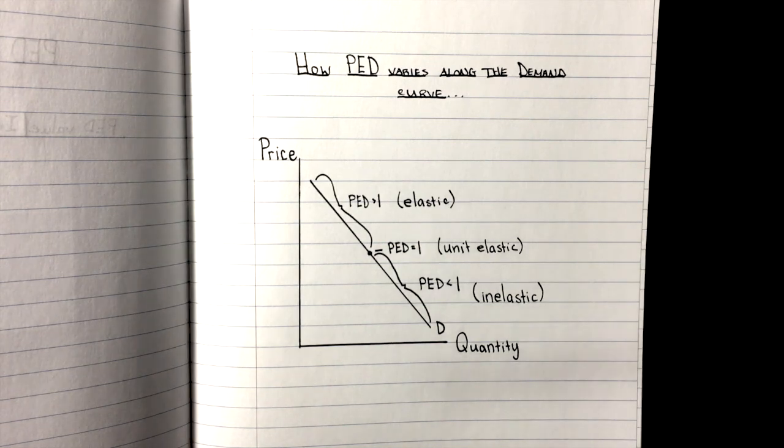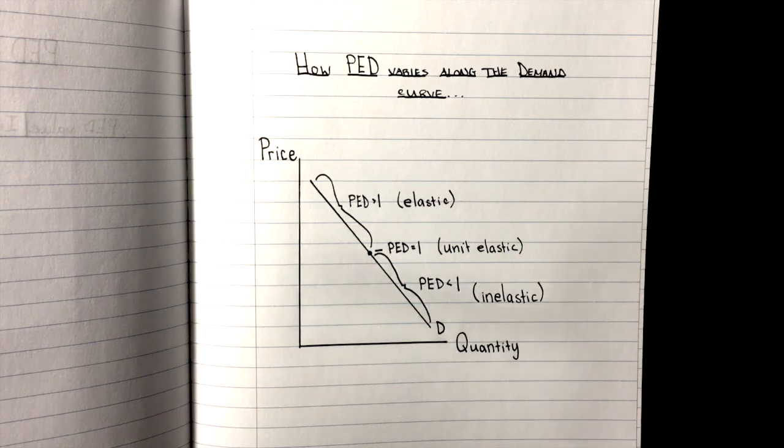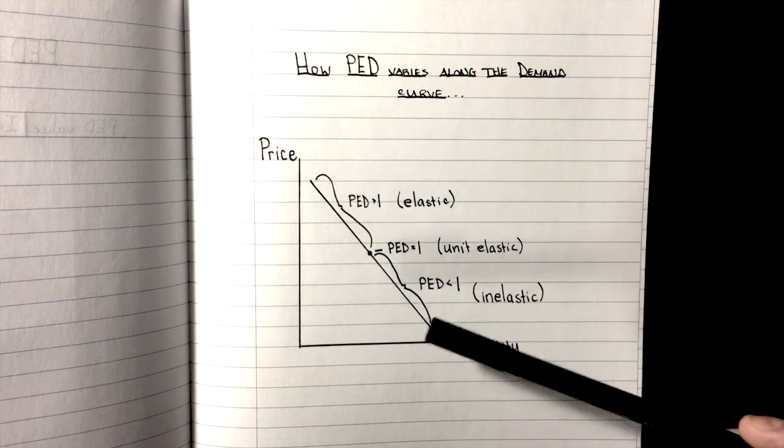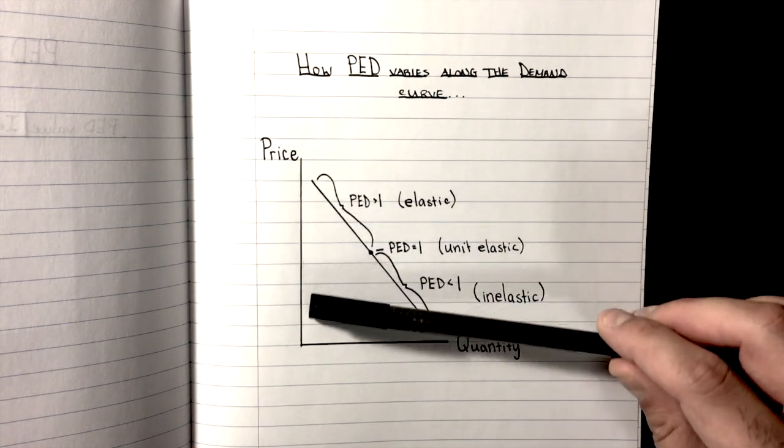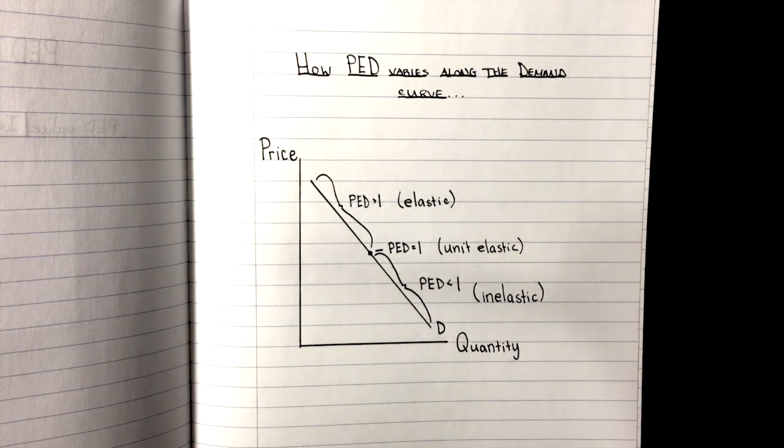And the example I like to give in class is the iPhone. Let's say the iPhone originally came out for $1,000. If you dropped the price 10% to $900, you would see a significant increase in customers. But if Apple continued to drop the price, you would eventually get to a place where the price might be as low as $1. At that price of $1, pretty much everyone that wants the iPhone has it.